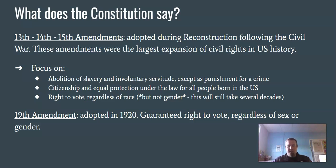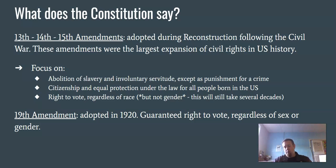The 19th Amendment, adopted in 1920, guaranteed the right to vote regardless of sex or gender. It took much longer to extend that right to vote to all peoples — race and gender hadn't been fully addressed until 1920.